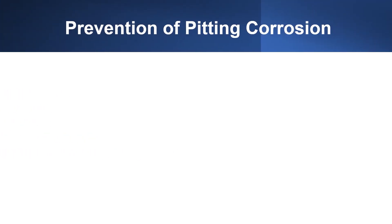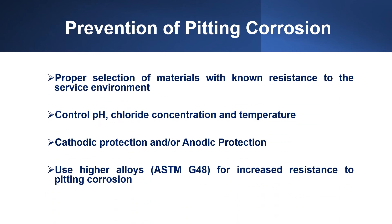To prevent pitting corrosion, we can select materials with known resistance to the service environment, control pH, chloride concentration and temperature, provide cathodic protection and anodic protection, and use higher alloys such as ASTM-G48 for increased resistance to pitting corrosion.